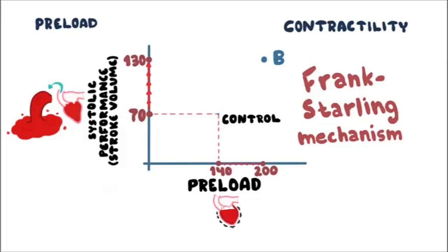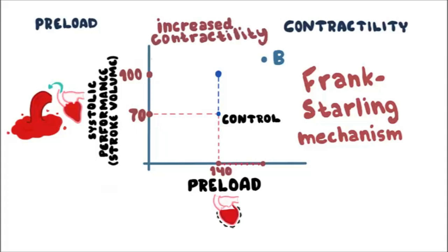If the preload remains unchanged at 140 mL, but the stroke volume is increased from 70 mL up to 100 mL — in other words, the ventricle is receiving 70 mL but pumping 100 mL — this means the performance of the ventricle is increased at the given preload. If the performance of the ventricle is increased while preload is not changed, this is because of increased contractility.